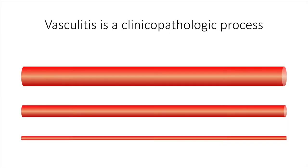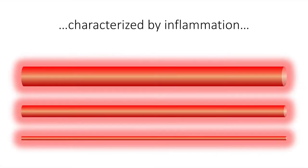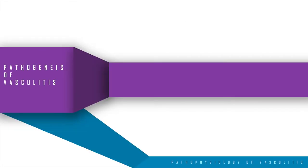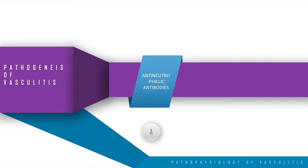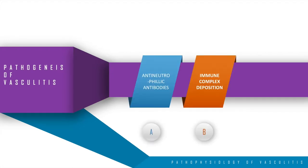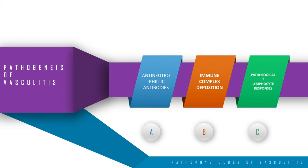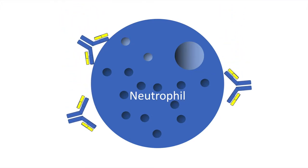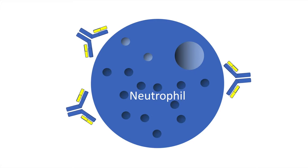Vasculitis is defined as a clinical pathologic process characterized by inflammation and damage to blood vessels. The pathogenesis of vasculitis involves anti-neutrophilic antibodies. This is a schematic diagram of a neutrophil; antibodies against the myeloperoxidase component or the perinuclear part of the neutrophil develop antibodies, called C-ANCA and P-ANCA respectively.